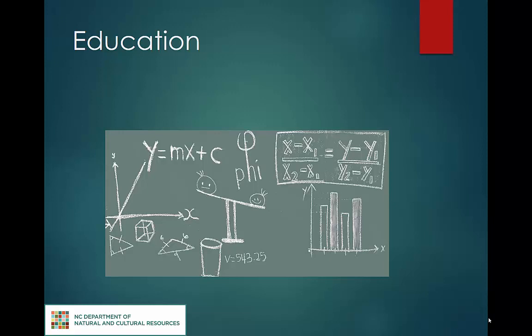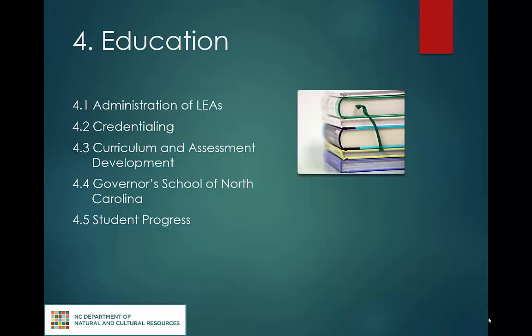The education schedule focuses on the diploma-granting entities at the state level, and it also applies to the Governor's School Program, the curriculum and assessment standards developed by the Department of Public Instruction, and agencies that oversee professional credentialing. Administration of local education agencies includes attendance data and course matrices. Credentialing encompasses the coursework and participant information for courses provided to non-agency personnel for professional certifications, such as schools to train and certify law enforcement officers to use a preliminary breath testing device. Curriculum and assessment development includes records about end-of-course tests and standard courses of study. The Governor's School of North Carolina collects records such as nominations and student records. Student progress is documented through items such as the cumulative record and graduation lists.